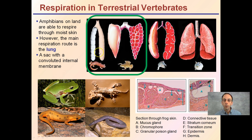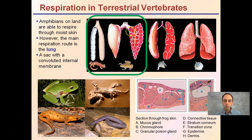Our first group of organisms we're going to look at are amphibians. They are land-based and are able to respire through moist skin in addition to their lungs. While the main route of their respiration is the lungs, they can also respire through their skin. There is a sac with convoluted internal membranes that helps increase the surface area, allowing for gas exchange to occur. That's why they're typically found in moist environments. The image here shows a cross-section of the frog's skin.